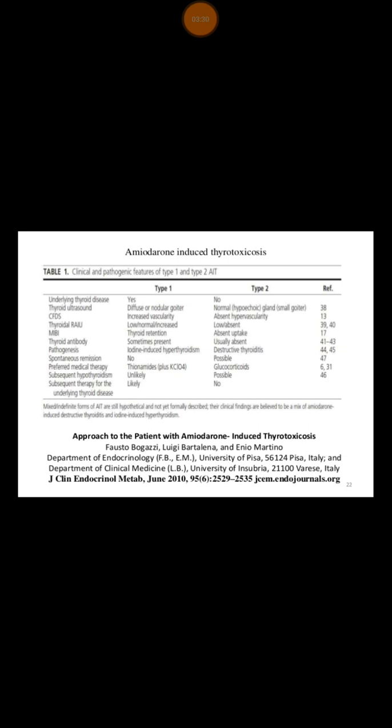In cases where you cannot differentiate between Type 1 and Type 2, the best approach is to treat empirically as Type 2 with steroids, then follow up with thyroid function tests. If thyroid function tests are improving, it means you are dealing with Type 2. If not improving, then you are probably dealing with Type 1, and you need to stop glucocorticoids and continue antithyroid treatment until spontaneous remission.